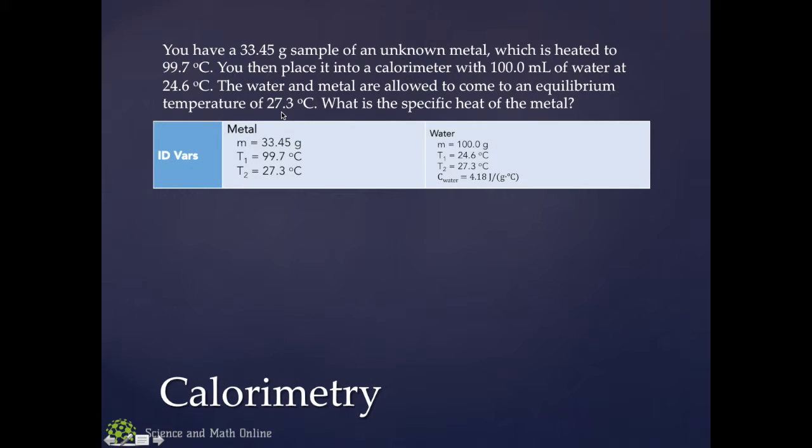All right, so, identifying variables. There's a lot of variables because we've got two different things. We've got the metal and we've got the water. So, identify your variables for the metal, that the metal's got this mass and these temperatures. Here's the variables for the water, mass, two temperatures, and we also know the specific heat of water, 4.18.